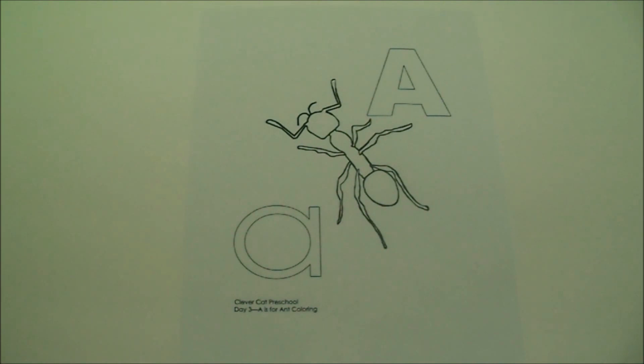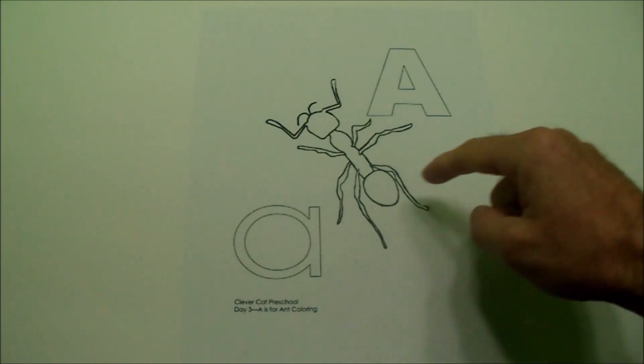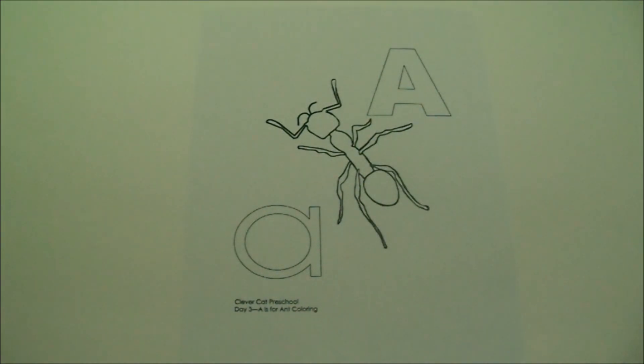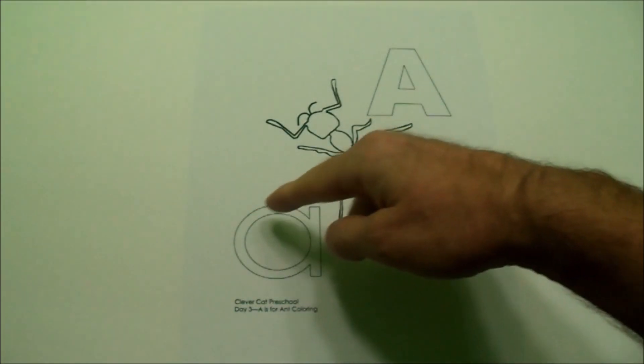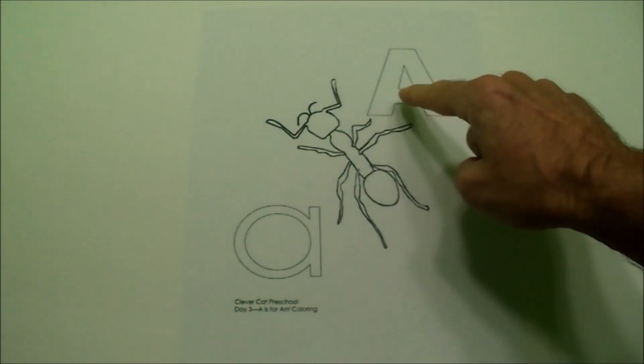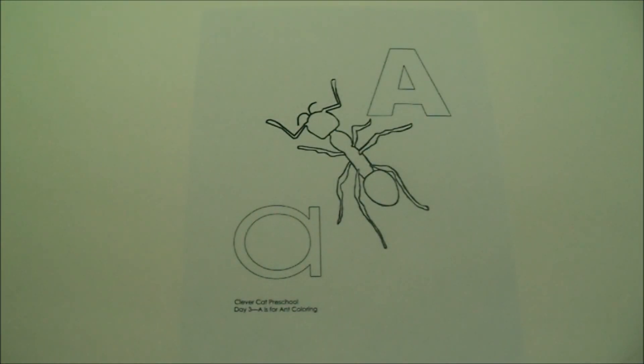I also see an ant. Could you tell that was an ant? Look, we have different shapes here. In the ant, we have a circle. We have a circle here. We have a triangle in the middle of the A.